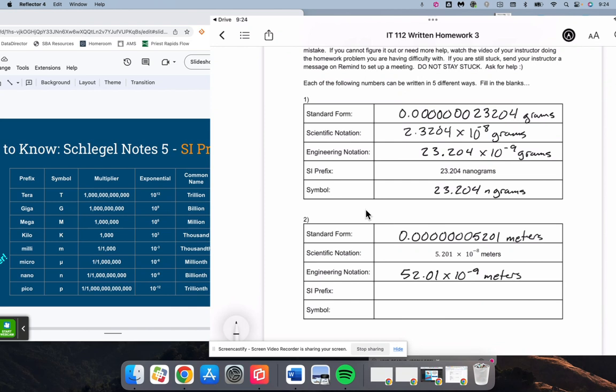And the SI prefix for negative nine is nano. So 52.01 nanometers. And then lastly, the symbol 52.01 n meters.